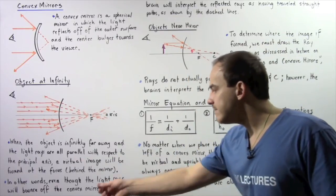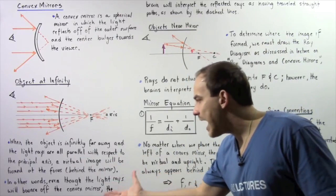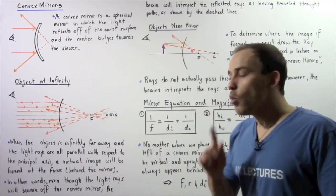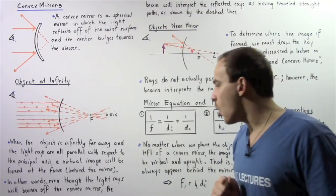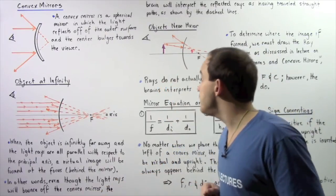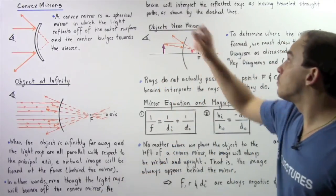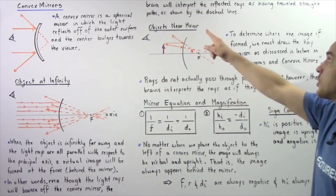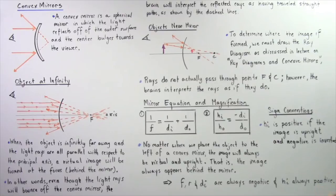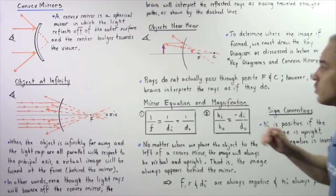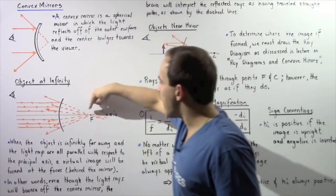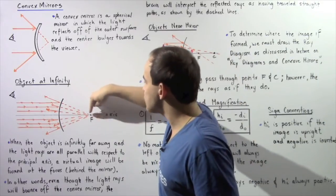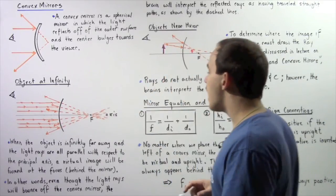When the object is infinitely far away and the light rays are all parallel to the principal axis, a virtual image is formed at the focus behind the mirror, on the right side. Even though the light rays bounce off the convex mirror, the brain interprets the reflected rays as having traveled straight paths, as shown by the dashed orange lines.